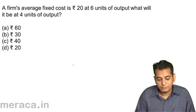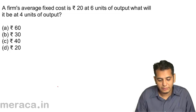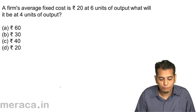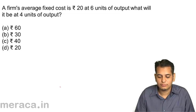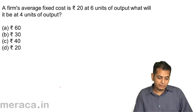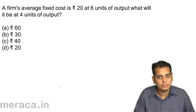A firm's average fixed cost is Rs. 20 at 6 units. What will it be at 4 units of output? A. Rs. 60. B. Rs. 30. C. Rs. 40. D. Rs. 20.